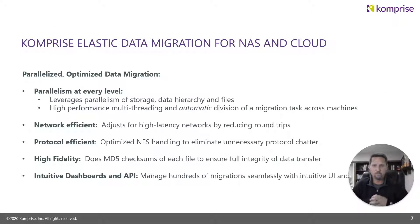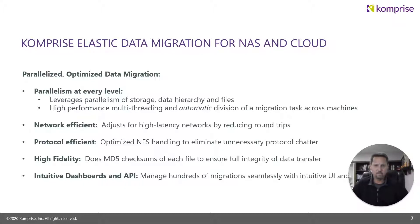Our Comprise Elastic Data Migration for NAS and S3 is very efficient. We use multiple parallelisms at every level, including at the storage, data hierarchy, and file levels. We use high-performance multi-threading across our observers to perform data migration tasks across multiple machines for higher efficiency. We've also enabled network and protocol efficiency, adjusting for high-latency networks and optimizing the NFS protocol to eliminate unnecessary chatter. With high fidelity, every file is validated using MD5 checksums. This is all managed through an intuitive dashboard or open APIs that enable you to manage hundreds of migrations seamlessly.